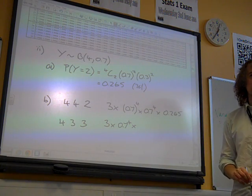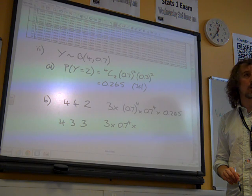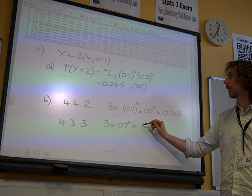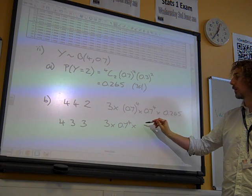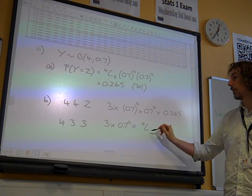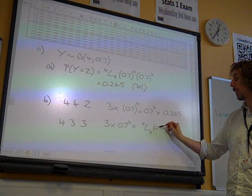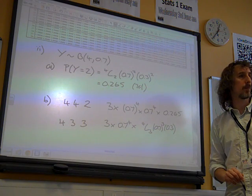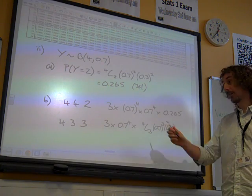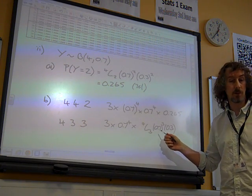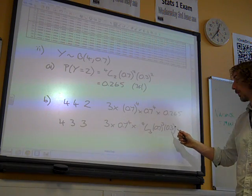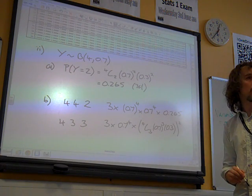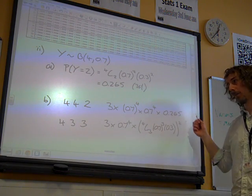And the probability of getting 3, well, that is 4C3, 0.7 cubed times 0.3. And that needs to happen twice, doesn't it? OK, I need to consider that happening both times. So that is squared, 0.7 to the 3 times 0.7 to the 3 again.